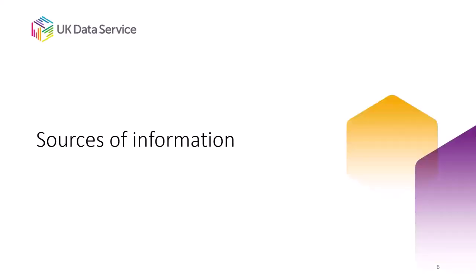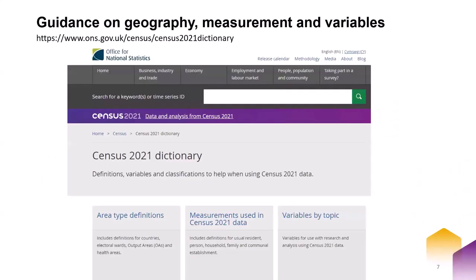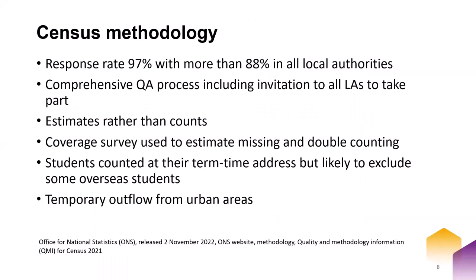So first of all, sources of information. This is the census page. When you go into this page there is a useful set of information in the Census 2021 dictionary — it brings a lot of things together. It talks about the area type definitions, the measurements, and we hold information about individuals, households, and dwelling spaces, and then details of each of the variables by topic with potential breakdowns. So it's a useful one-stop shop to check information.